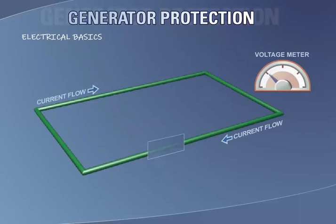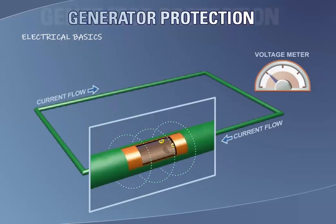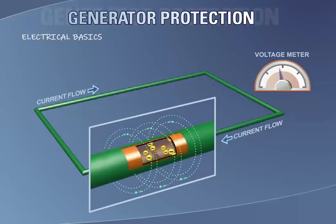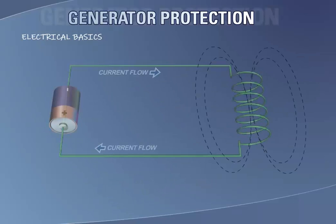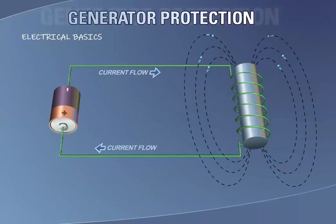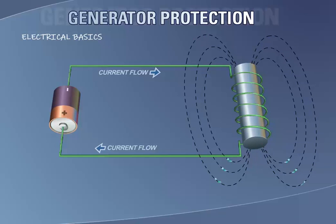When current flows through a conductor, a magnetic field is formed. The higher the current flow, the stronger the magnetic field. An electromagnet can be formed by winding the conductor around a material such as iron, which has a low permeability or resistance to the flow of magnetic lines of flux. Depending on the direction of current flow, one end of the iron core will be a north pole, while the other is a south pole.